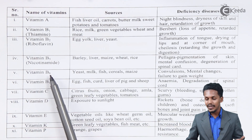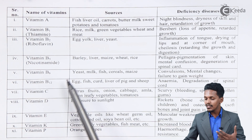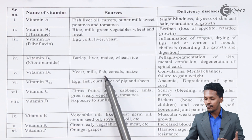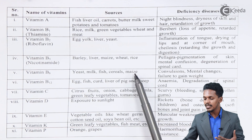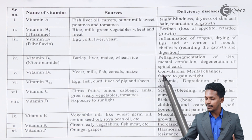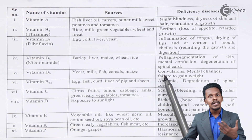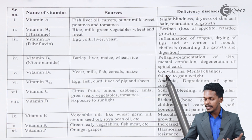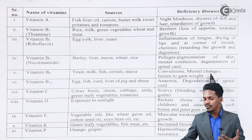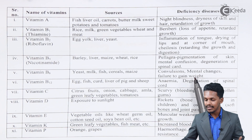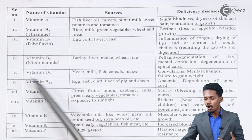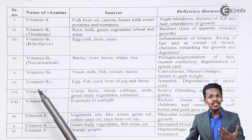Vitamin B6 has its sources from yeast, milk, fish, cereals, and maize. The deficiency disease it can cause includes convulsion, mental changes, and failure to gain weight. This shows how much vitamins are needed by our body.